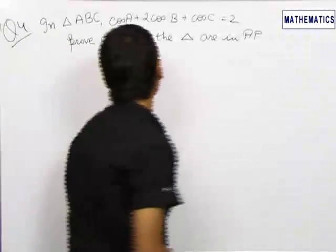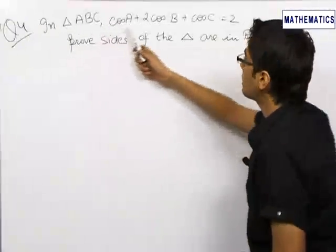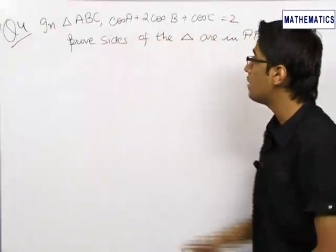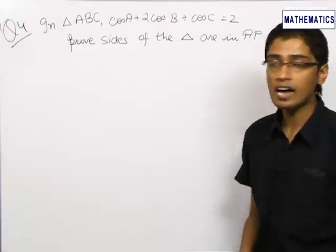In our next problem, we are given that in triangle ABC, cos A + 2 cos B + cos C = 2, and we need to prove that the sides of the triangle are in AP.